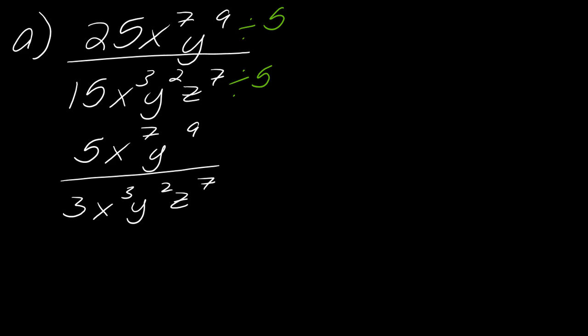Okay, so now we need to think back to our good old days of exponent rules. So what you'll notice here, I've got x to the seventh over x to the third. So what I can do is I can subtract the three from the top. And I can do the same thing with the y's too. So I've got y to the ninth over y squared. So I can subtract the two and cancel that out entirely. So in this case, my final answer would be 5x to the fourth y to the seventh over 3z to the seventh.